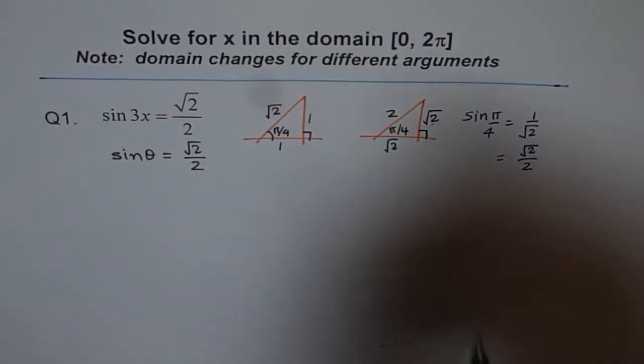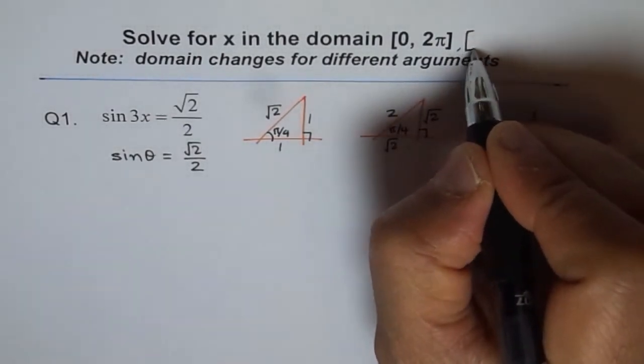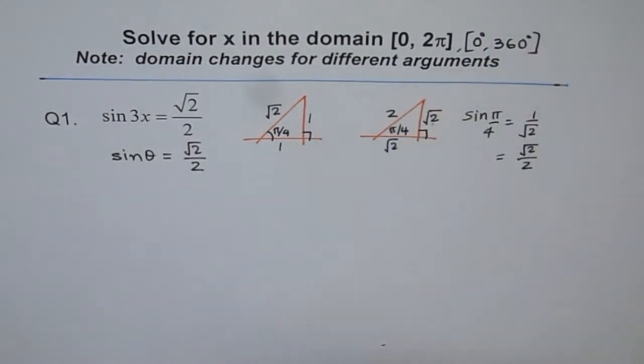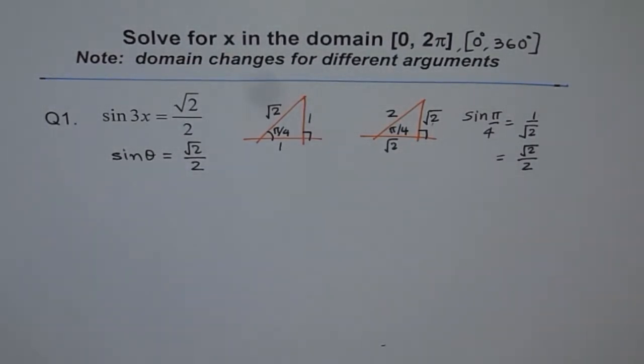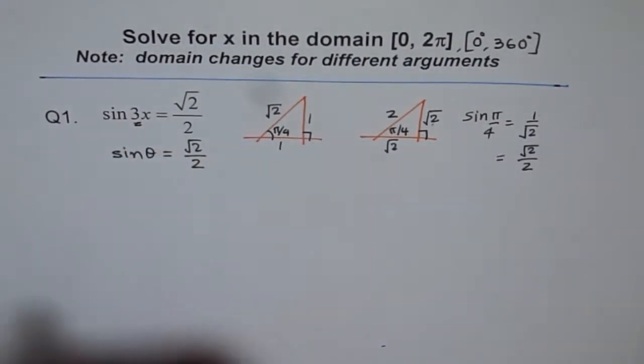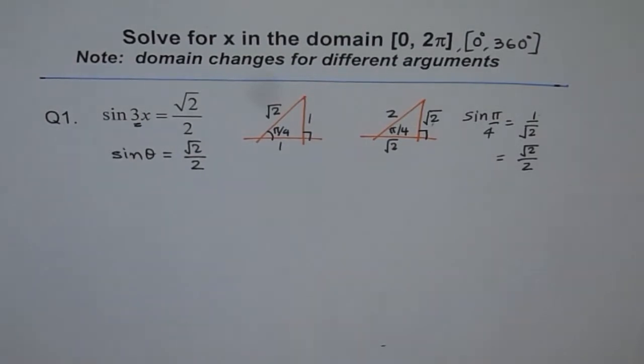So we know from here that the related acute angle for us which gives us the solution is π by 4 or 45 degrees. Now, I'm just saying 45 degrees and not π by 4. Some of my students are working in degrees. So let me just change this to 0 to 360 degrees. Now, the thing is, it is not just sin x which is equals to square root 2 over 2, but it is sin 3x. So what difference does that make? This is what I want to explain you.